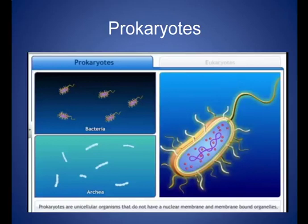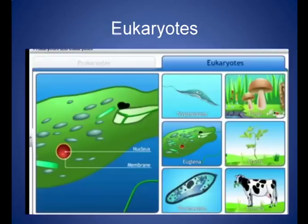Eukaryotes are characterized by a membrane-bound nucleus and membrane-bound organelles — their nucleus is bounded by a particular membrane, and their organelles are also membrane-bounded. Eukaryotes are of two types: unicellular and multicellular. Unicellular eukaryotes include trypanosoma, euglena, and paramecium, whereas fungi, plants, and animals are multicellular eukaryotes.